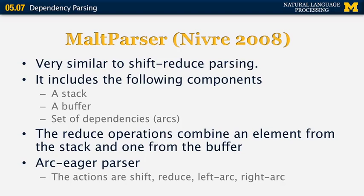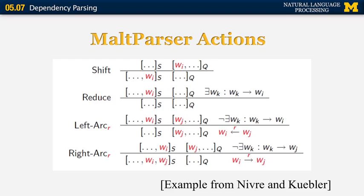One of the most popular techniques in recent years is the MALT parser by Joachim Nivre, which has undergone many changes over the years. It is similar to shift-reduce parsing and includes a stack, a buffer, and a set of dependency arcs. The reduce operation combines an element from the stack with one from the buffer. The arc-eager parser — one version of MALT — includes shift, reduce, left arc, and right arc operations. In shift, a word is removed from the sentence and added to the stack; in left/right arc, the first word in the buffer combines with the top of the stack to form a new dependency.